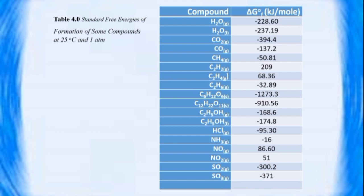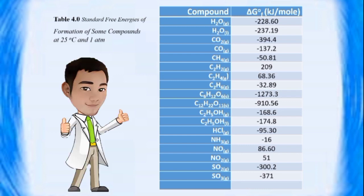Just like in standard entropy, be mindful of the states of a particular element or compound. For example, the standard free energies of formation of water in the gaseous state differ from those of water in the liquid state, which are negative 228.60 kJ per mole and negative 237.19 kJ per mole, respectively.